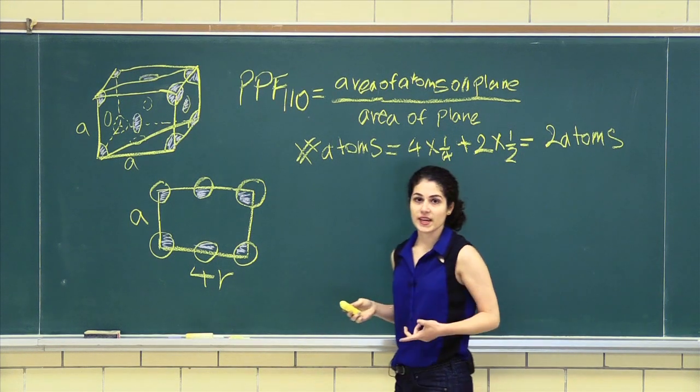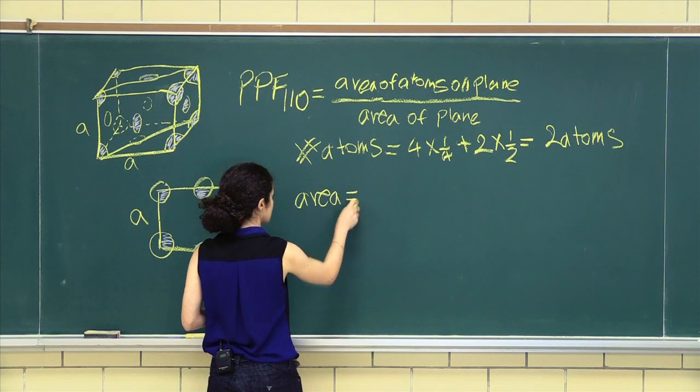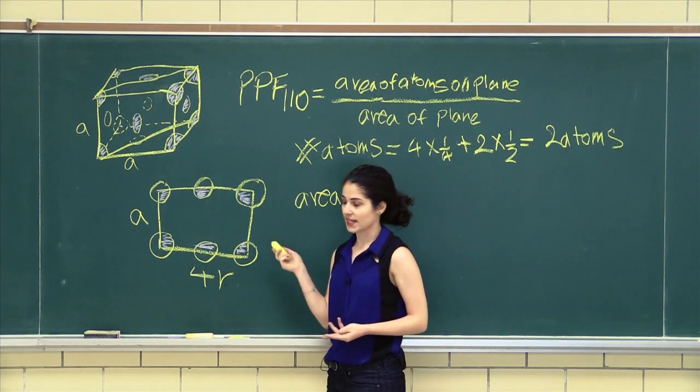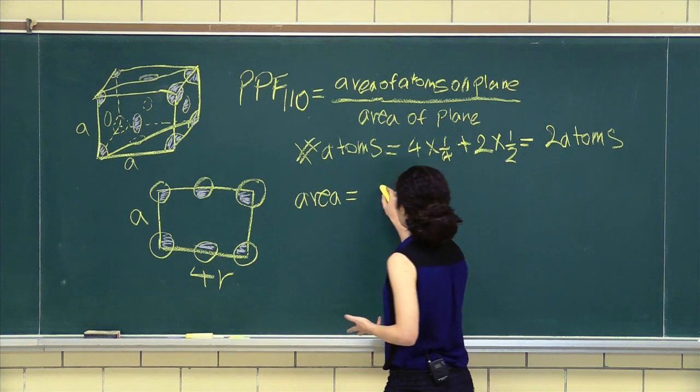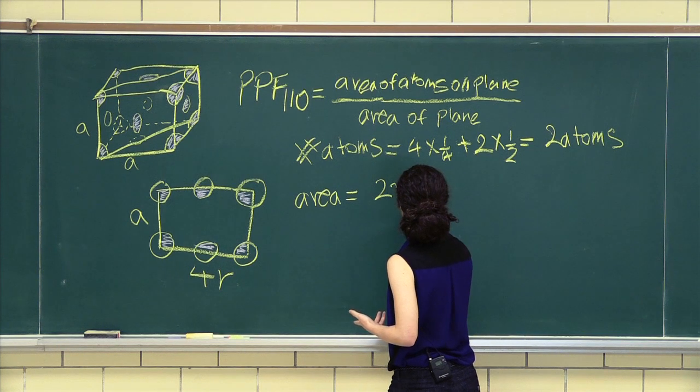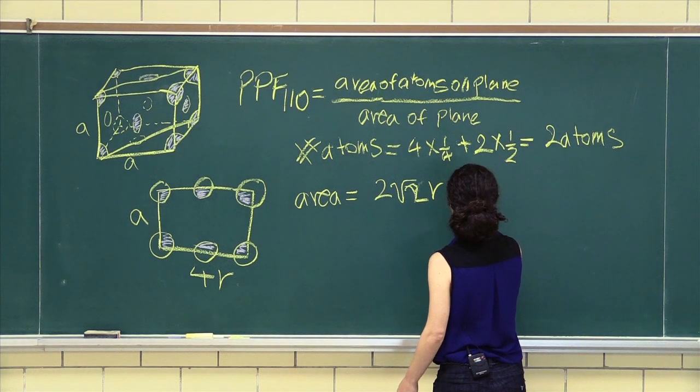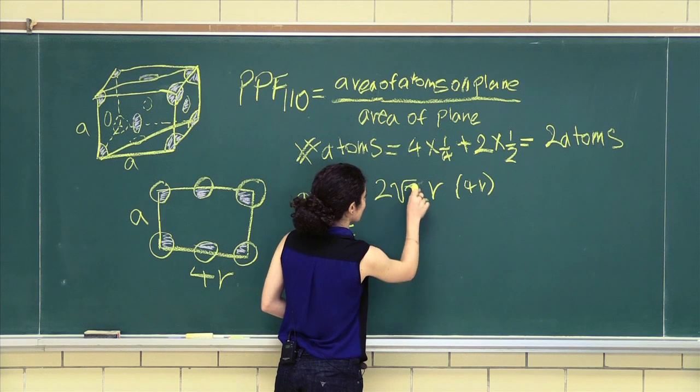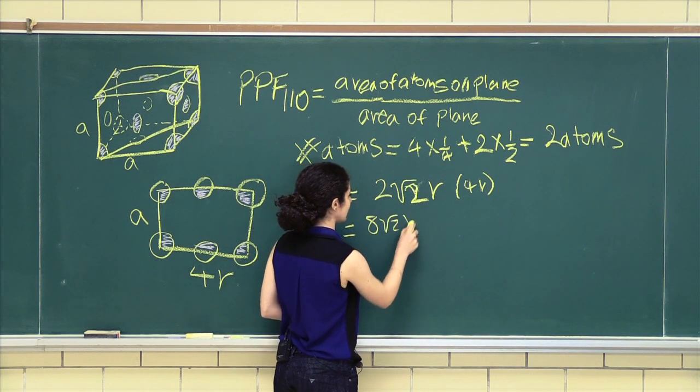Now we want to find out the area of the plane. The area of the plane is a times 4r. It is a rectangle, after all. And a for an FCC is 2√2r. So 2√2r times 4r. So you have 8√2r² for your area.